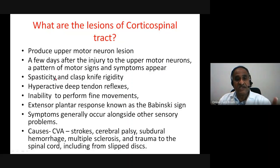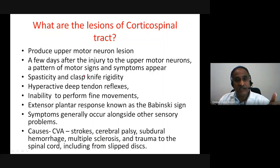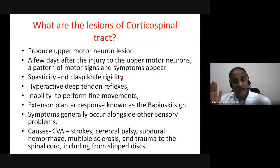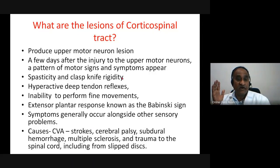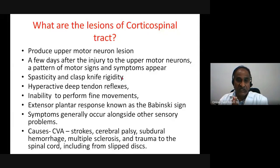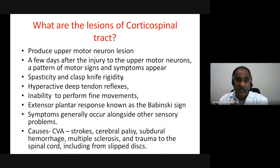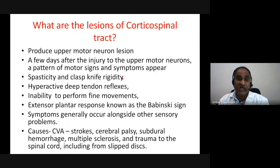The upper motor neuron lesion produces spasticity and clasp-knife rigidity on the opposite side. For example, a right internal capsule lesion affects the left side. The uncrossed fibers of the anterior corticospinal tract reach down and interact on both sides, so posture and equilibrium are largely spared — if the right one is lost, the left takes over. However, the distal muscles supplied by the lateral corticospinal tract show spasticity and clasp-knife rigidity on the opposite side.